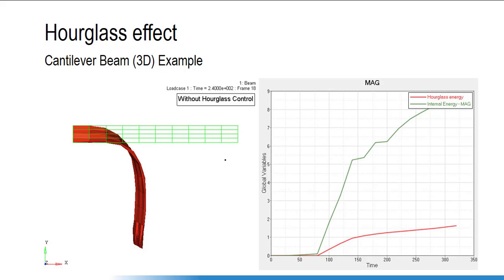The hourglass phenomenon occurs not only on 2D elements but also on 3D elements. This is the same beam as a 3D element with a load of 100 Newton. For a steel beam of length 100 mm, thickness 1 mm, and height 10 mm, 100 Newton should never cause such extreme deformation. It is deforming like that because of hourglass energy — up to around 80 milliseconds the component behavior is good, but after that suddenly hourglass energy grows because of bending.